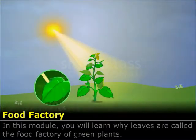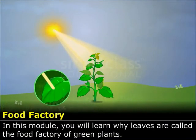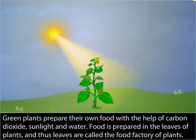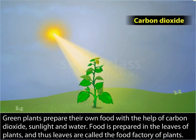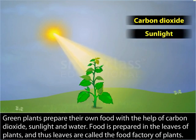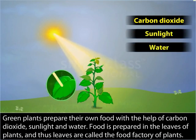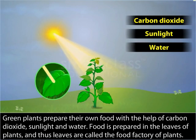In this module, you will learn why leaves are called the food factory of green plants. We know that green plants can prepare their own food. For this, they require carbon dioxide, sunlight and water. Food is prepared in the leaves of plants and thus, leaves are called the food factory of plants.